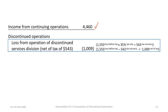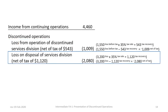We begin with our income from continuing operations, and then show our discontinued operations section — this time starting with a loss from the operation of the services division. The numbers are still the same but with the opposite sign. A $1.55 million loss at a 35% tax rate means the tax recovery is $543,000, resulting in a net of tax loss of $1,009,000. The information relating to the loss on disposal of the services division is unchanged: a $3.2 million loss at a 35% tax rate gives us a net loss on disposal of $2,080,000.